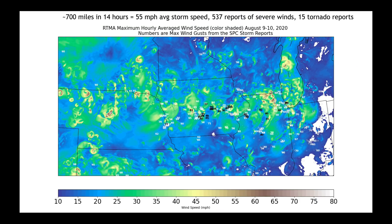In total, the storm system was about 700 miles long — that's how far it traversed. It took about 14 hours, which gives us an average storm speed of about 55 miles an hour. We received over 500 reports of severe winds and 15 tornado reports, most of those from Northern Illinois.